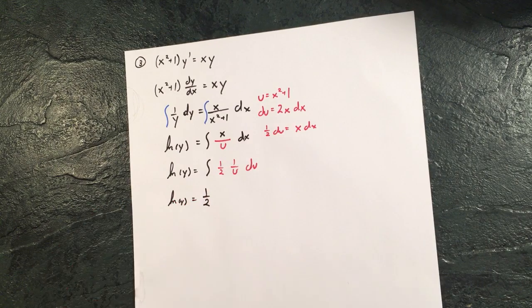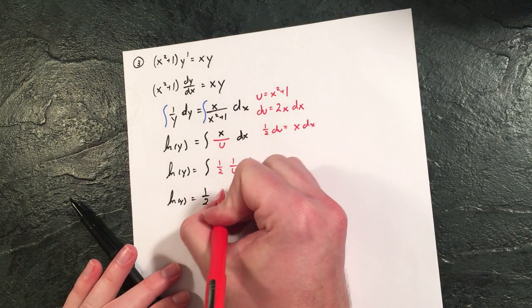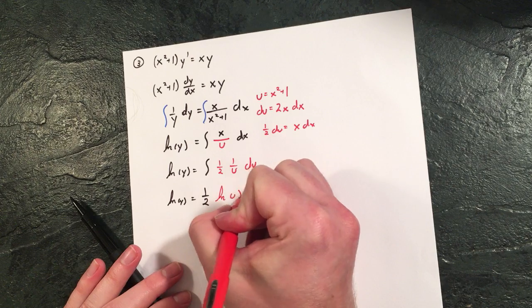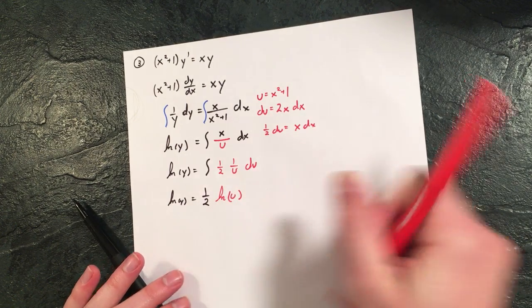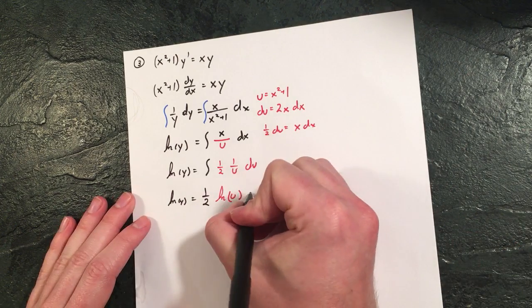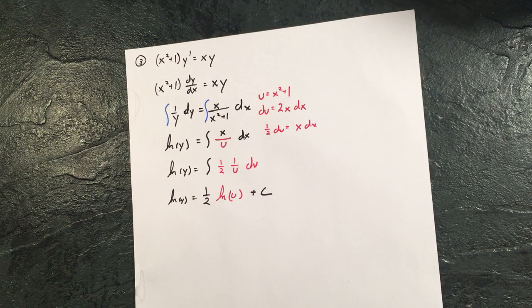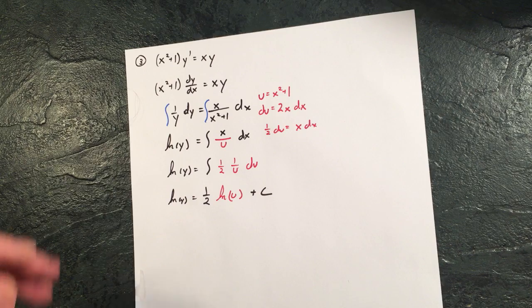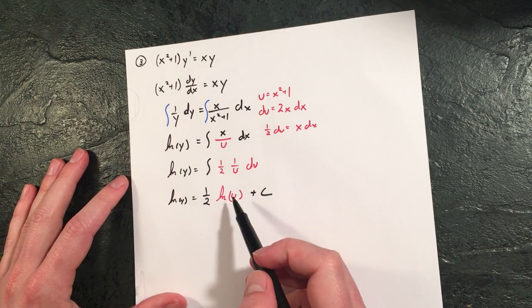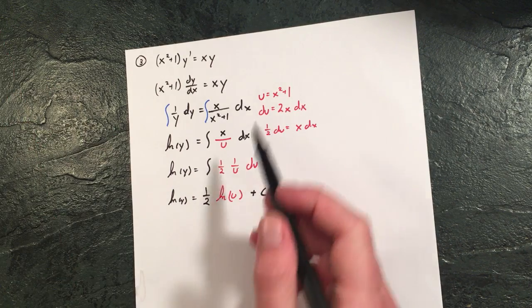So that one half is fine and the one over u is becoming ln of u and then we're going to have that plus c. But notice what's still kind of left in red is we're still in u world here, so we have to be able to substitute from u back to x world.